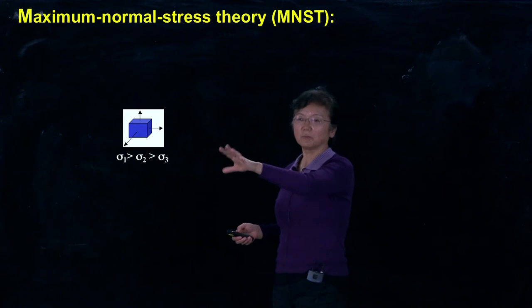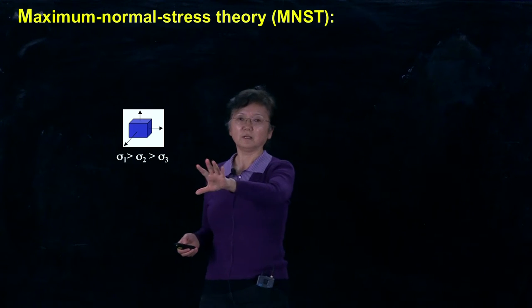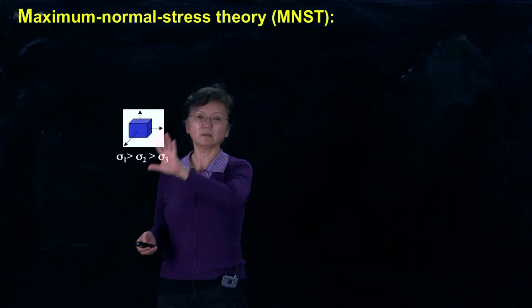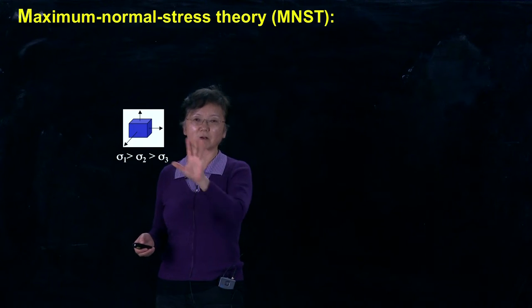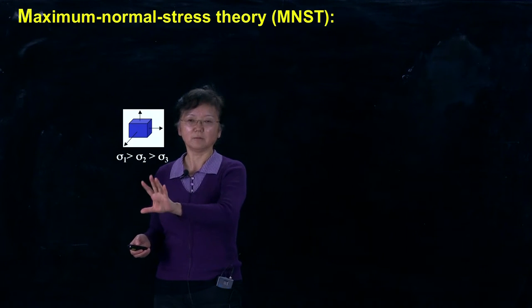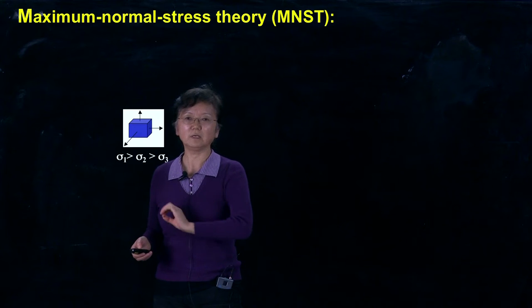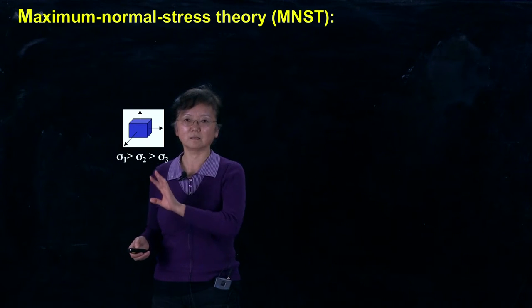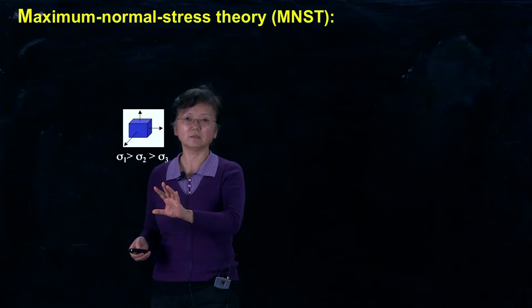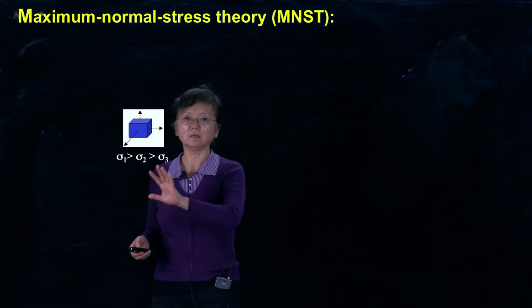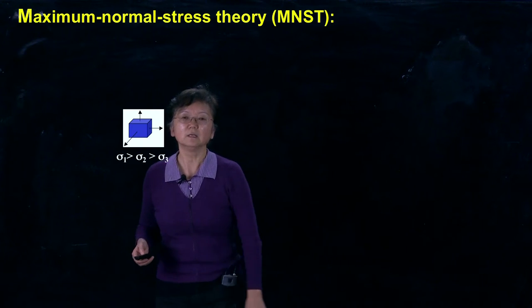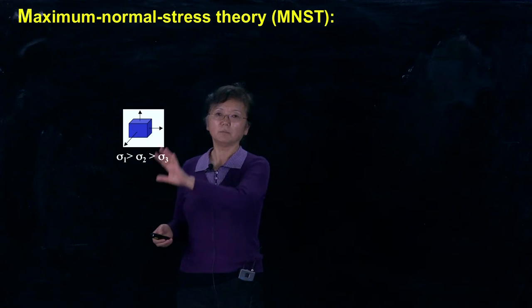Let's continue from our previous video. From our complicated stress analysis of our complicated part system, we come up to a three-dimensional stress status: principal stresses. Those are σ1, σ2, and σ3. This is our real part situation.